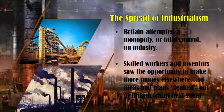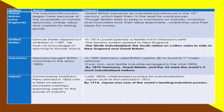Now let's proceed with the spread of industrialism. Great Britain attempted a monopoly during the Industrial Revolution — meaning total control of the industry. But skilled workers and inventors saw the opportunity to make more money elsewhere, so ideas and plans were leaked out of Britain. The ideas reached the United States, Germany, and Japan.